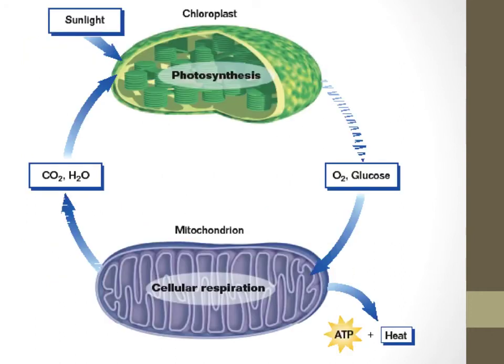If you look at the big picture, the products of each of these chemical reactions are the reactants of the other. The big picture is that energy in the form of sunlight is used to produce ATP for autotrophic cells. For heterotrophs, you merely need to cut out the top half of this graphic where photosynthesis takes place — heterotrophs just eat other organisms to obtain their energy instead of doing photosynthesis.